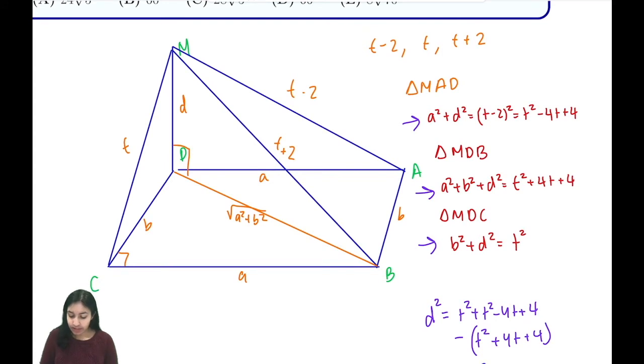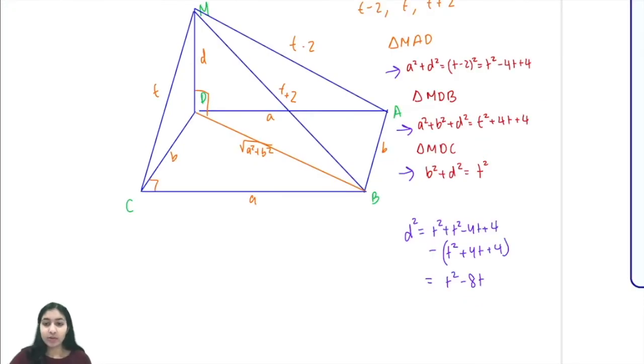Now we can plug in our value of d² to find a² and b². We know a² is equal to t² - 4t + 4 minus d², which is t² - 8t, and that gives us that a² is 4t + 4. Similarly, b² is t² minus d², which is t² - 8t, so we know that b² is 8t.